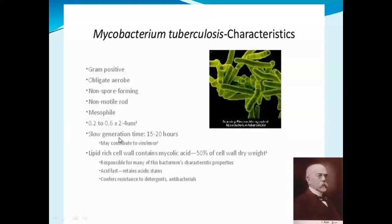Mycobacterium tuberculosis has a slow generation time of 15 to 20 hours. Generation time is the time required to double the microbial population — for example, from one bacterium to two. In the case of M. tuberculosis, 15 to 20 hours are required for one cell to become two cells, which is very large compared to other bacteria.